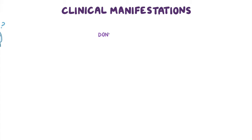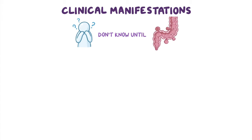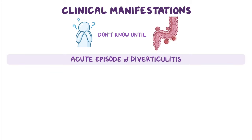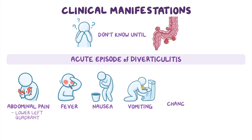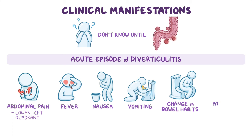The clinical manifestations of diverticular disease will depend on the severity of the disease. Most of the time, clients won't even know they have diverticulosis until the diverticula become inflamed, leading to an acute episode of diverticulitis. At this point, they may present with abdominal pain, which typically localizes in the lower left quadrant of the abdomen, fever, along with nausea and vomiting, a change in bowel habits like alternating constipation and diarrhea, as well as painless hematochezia, which means bright red or maroon blood passing from the rectum.